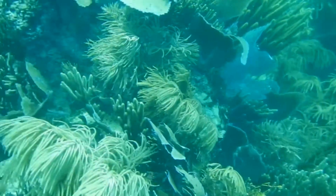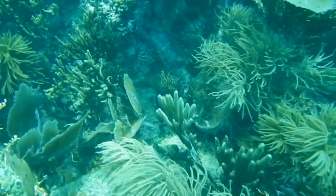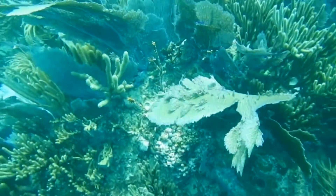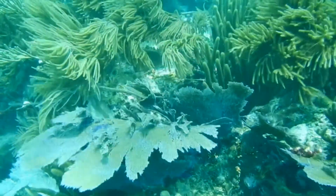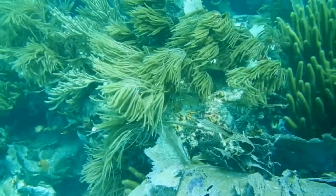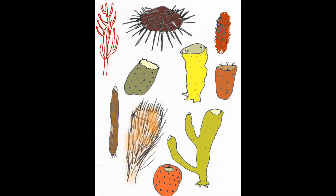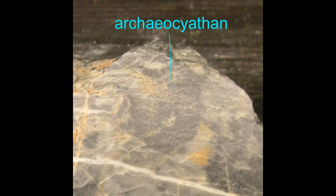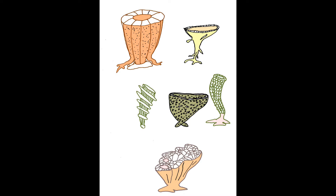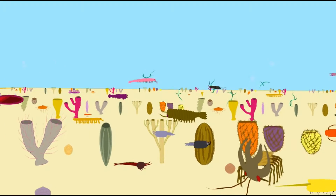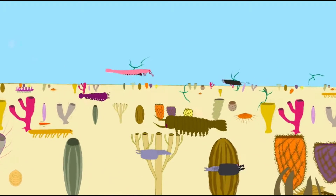Half the history of coral reefs during the Paleozoic Era passed before a single member of the modern group of scleractinian corals had evolved. Sponges were the first animals in the ocean and were the first animals to compose reefs, and they were the major components of the early Cambrian reefs.